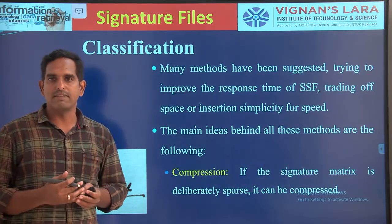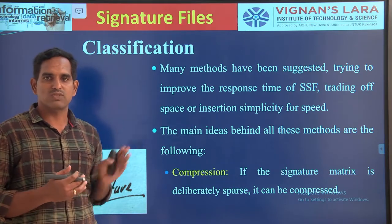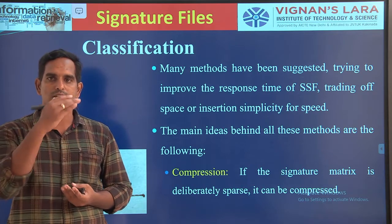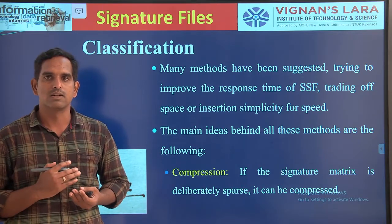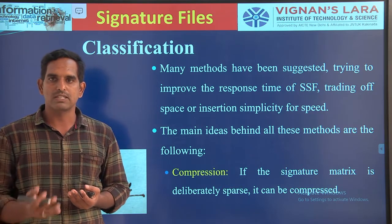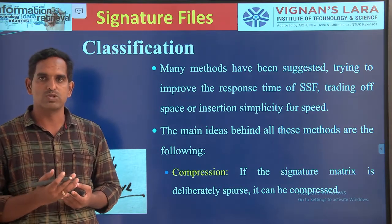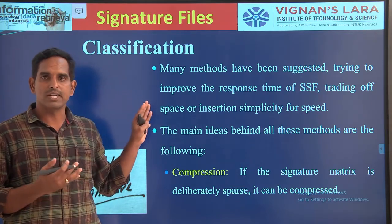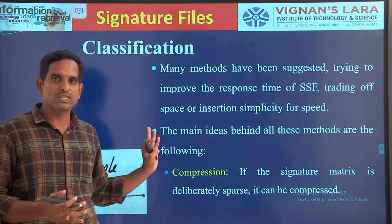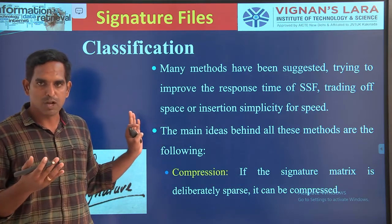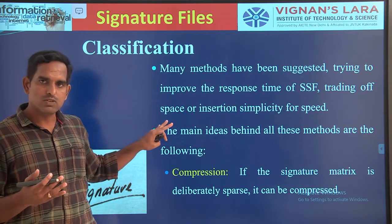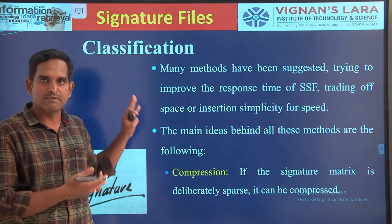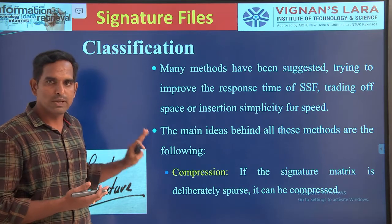We will be having the classification part. We have seen the sequential signature file where you store block signatures in a sequential fashion in a row-wise manner. By storing in this manner, we have a certain space overhead and some issues with the retrieval process. In order to improve upon the sequential signature file, we will be proposing some methods. The main ideas for developing improvements and finding the classification of your signature files involve three methods: compression, vertical partitioning, and horizontal partitioning.